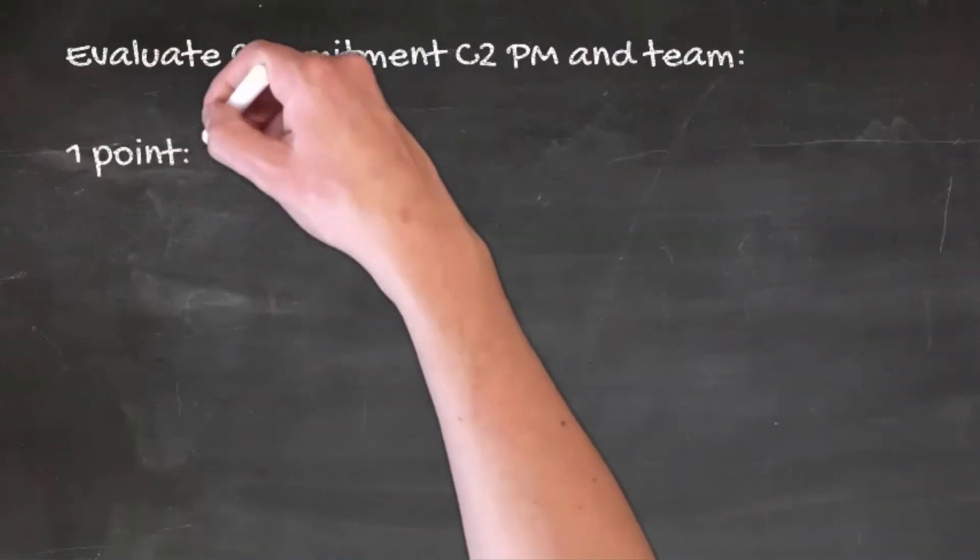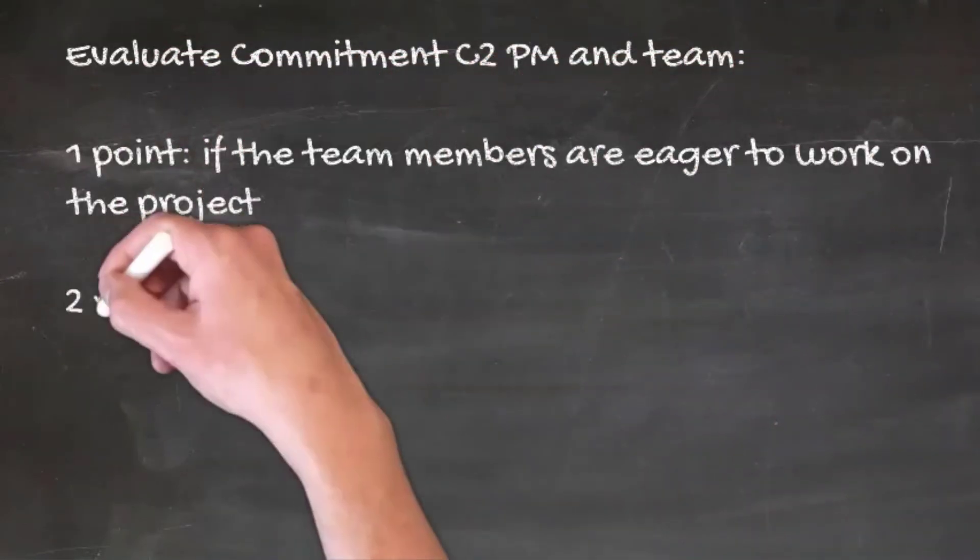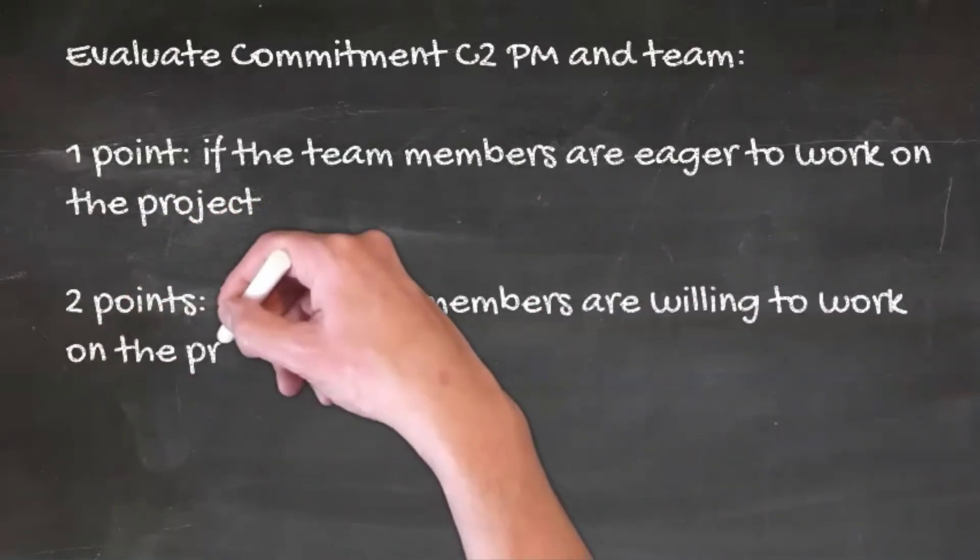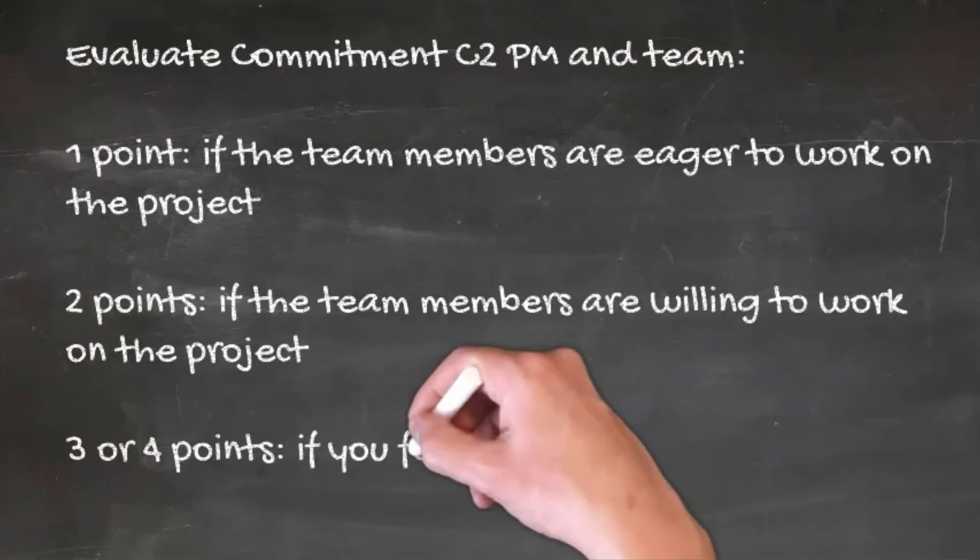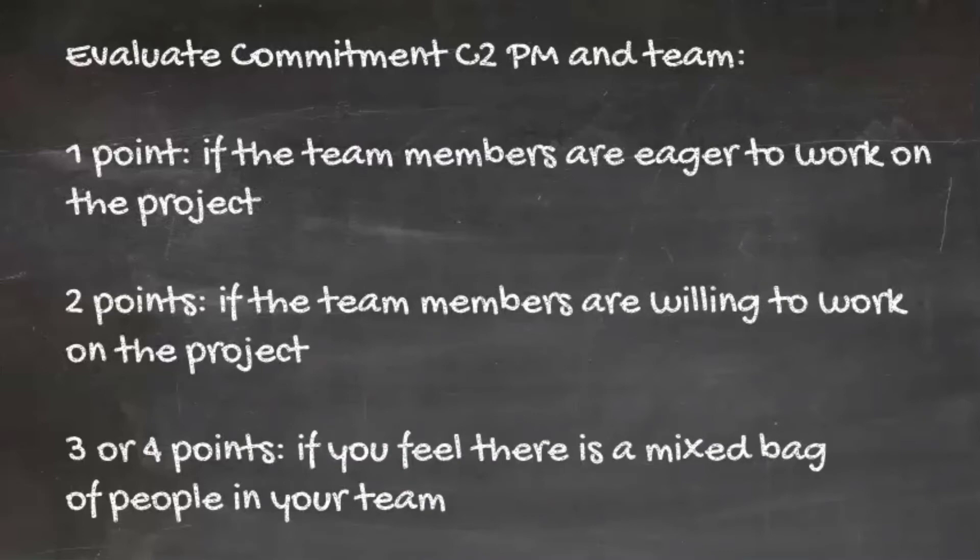On the other hand, evaluating commitment for C2 PM and team, one point is given if the team members are eager to work on the project. Two points are given if the team members are willing to work on the project. And three or four points if you feel there is a mixed bag of people in your team.